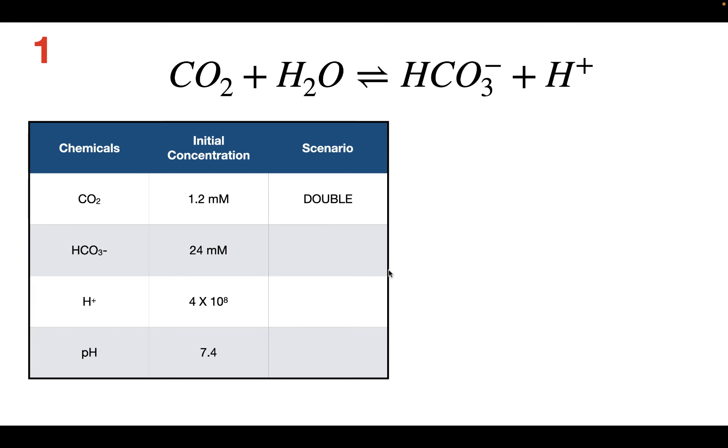What we can do to calculate the pH is use this equation here, the Henderson-Hasselbalch equation. When you do that, you plug in these values. Remember that the A- on the numerator is going to be the bicarbonate, so that's 24 millimolars. And then at the bottom, you have for the acid, the CO2, which is 2.4.